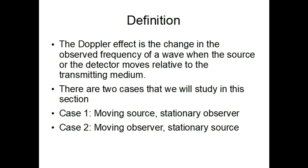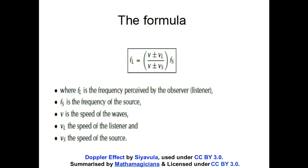As always, there is a formula for Doppler Effect. The formula is: F_L equals brackets V plus-minus V_L divided by V plus-minus V_S, close bracket, times F_S. F_L is the frequency perceived by the observer or listener — L stands for listener. F_S is the frequency of the source, the sound or frequency given off from the source.